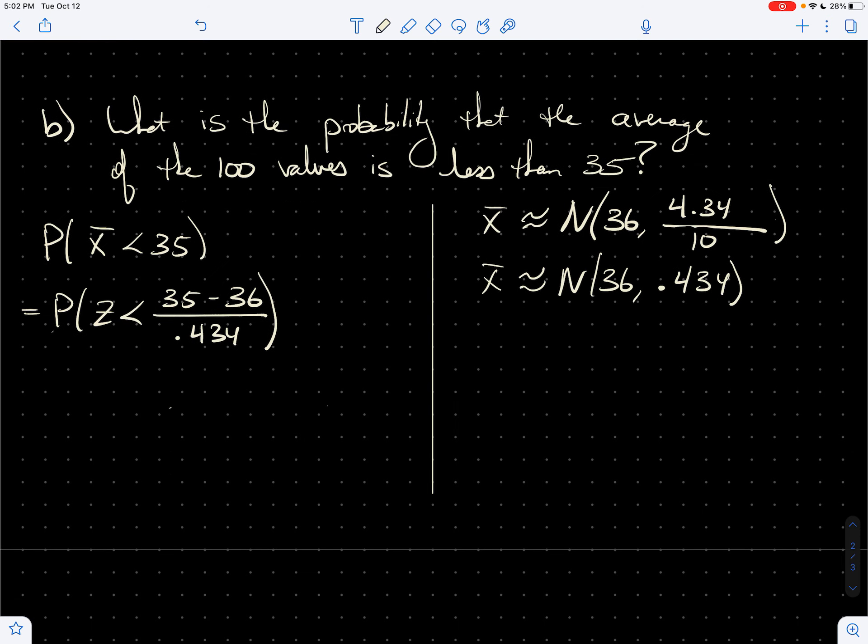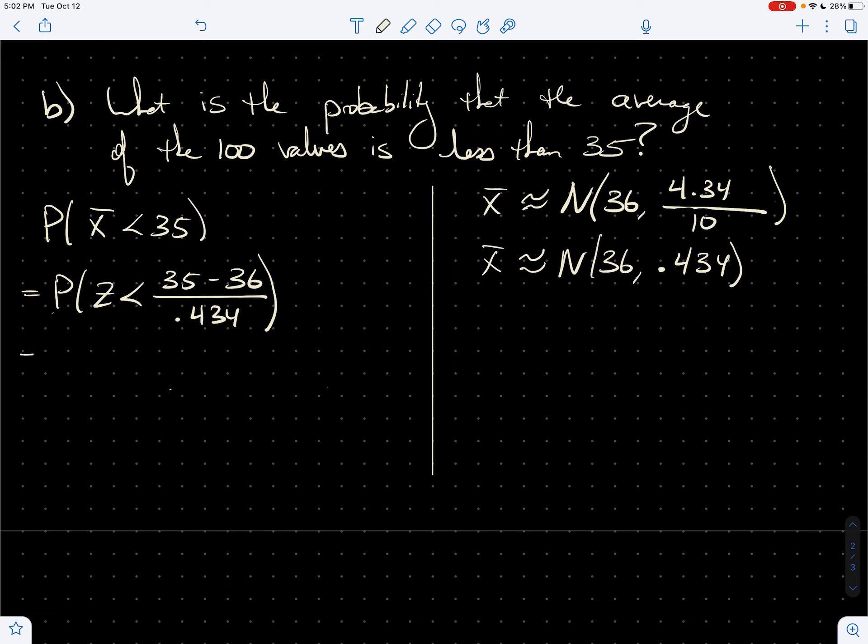And so what, that's negative 1 divided by 0.434. And I get negative 2.304. So this is the probability that Z is less than negative 2.3041.